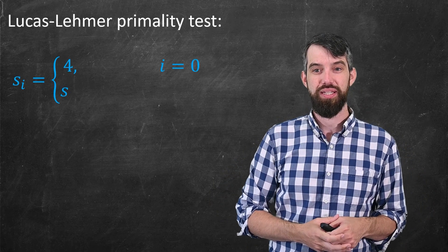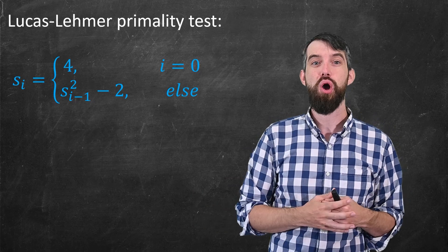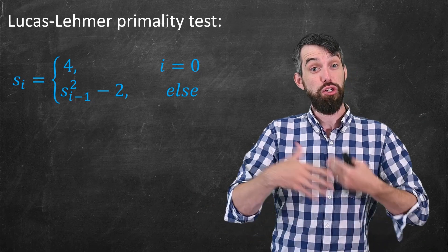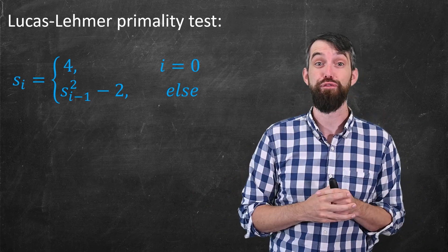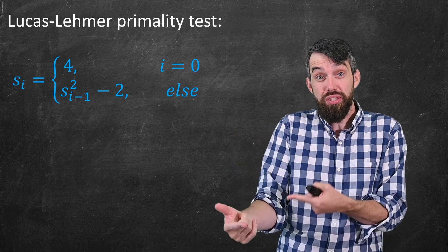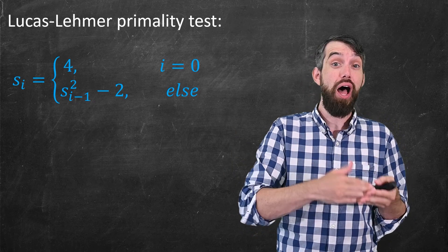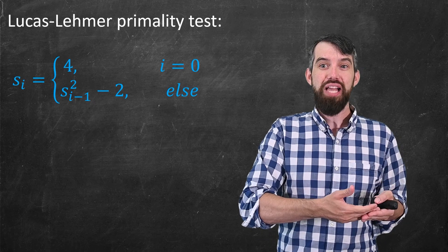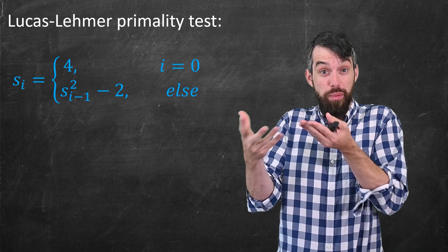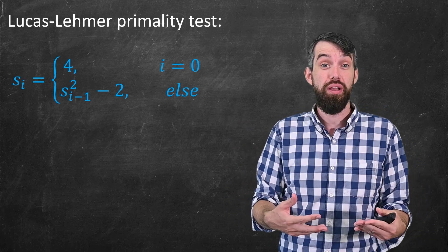So what is this test? Well, it starts with a sequence. So I have a new sequence. I'm going to call it s_i. The 0th term, when i equals 0, is just the number 4, so it's starting at 4. And then this is recursively defined such that for i bigger than 0, s_i is just defined to be s_(i-1), the previous term, squared minus 2.